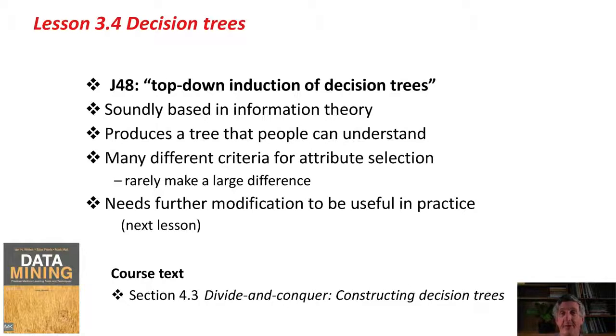There are a lot of different criteria you could use for attribute selection. Here we're using the information gain. Actually, in practice, these don't normally make a huge difference. There are some important modifications that need to be done to this algorithm to be useful in practice. I've only really explained the basic principles. The actual J48 incorporates some more complex stuff to make it work under different circumstances in practice, and we'll talk about those in the next lesson.